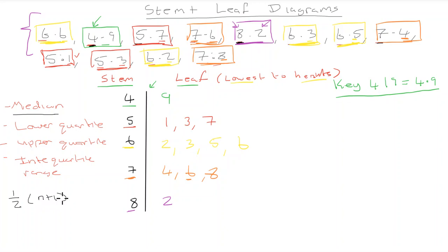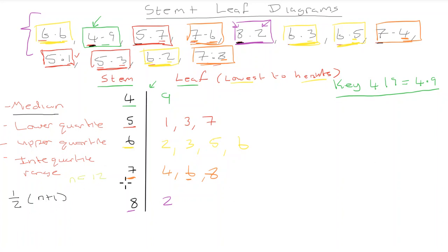Counting the values on our diagram: 1, 2, 3, 4, 5, 6, 7, 8, 9, 10, 11, 12. So n = 12. The median position is one-half of (12 + 1) = one-half of 13 = 6.5. So the median lies between the 6th and 7th position.